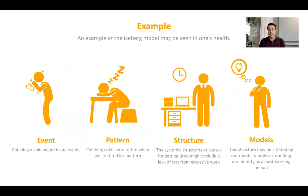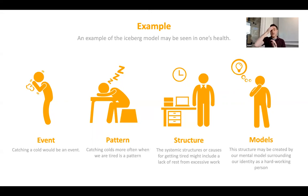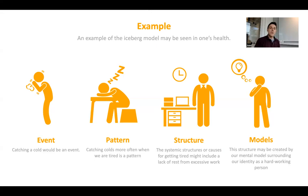That's the iceberg model. As a quick example using personal health: at the event level, it might be catching a cold. A pattern might be that we're often catching colds when we're tired. Behind that is the structure: getting tired might include a lack of rest from excessive work. And behind that is a mental model of thinking of ourselves as a hard-working person who spends a lot of time working, which leads to the pattern of getting sick. The iceberg model shows us where to intervene and the level of leverage. If we try to just prevent the immediate event — take some medicine to get rid of the cold — that's not going to change much. We have to actually change our way of thinking about who we are and our relationship to work if we really want to change that pattern.